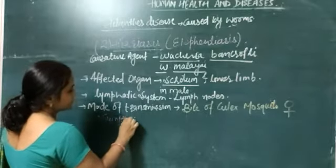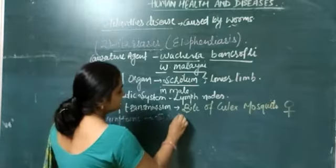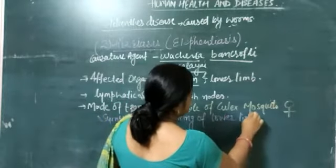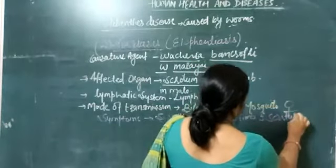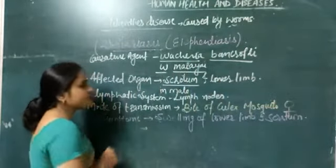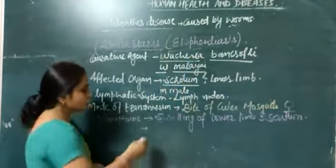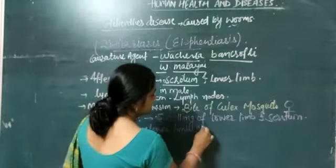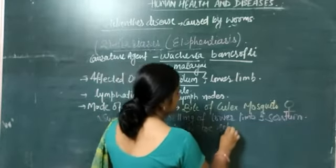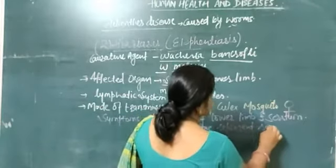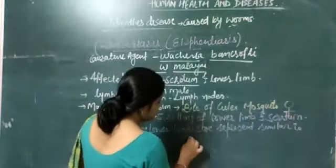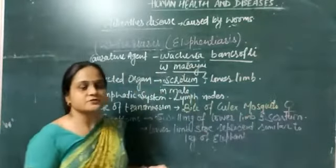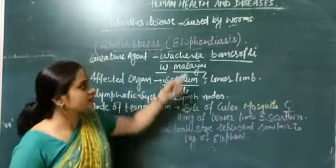The symptoms include swelling of the lower limb and scrotum. The main feature — as the name Elephantiasis suggests — is that the size of the lower limb becomes similar to the leg of an elephant. That is why this disease is called Elephantiasis.